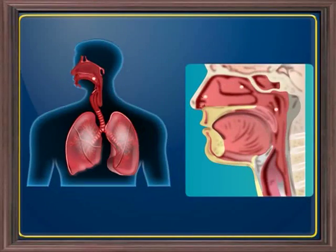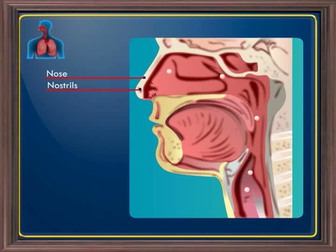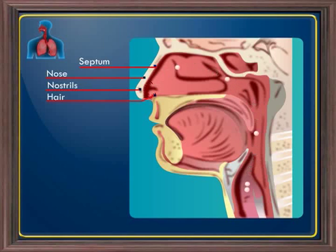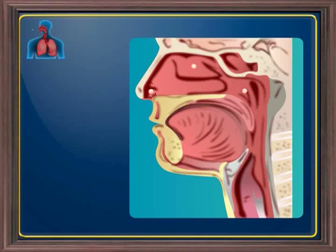Human beings respire through the nose or nostrils. The external part of the nose bears two nostrils separated by a septum. The nostrils are equipped with cells sensitive to smell and can detect different types of odours. Further entry of large particles is prevented by hair present in the nostrils. The nostrils open into the nasal passage or chambers, which are lined with glands that secrete mucus.